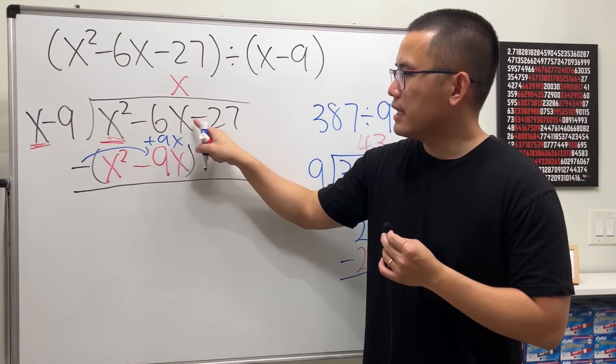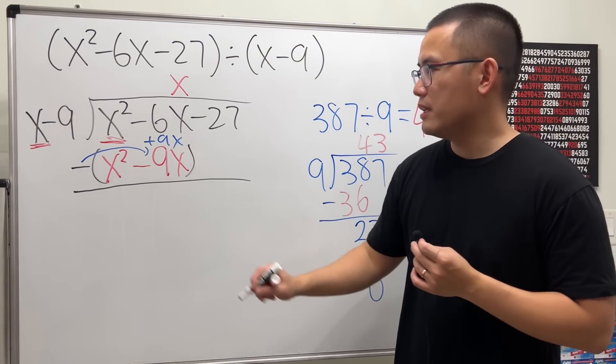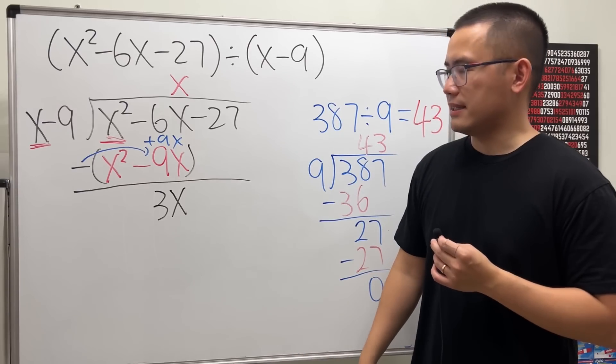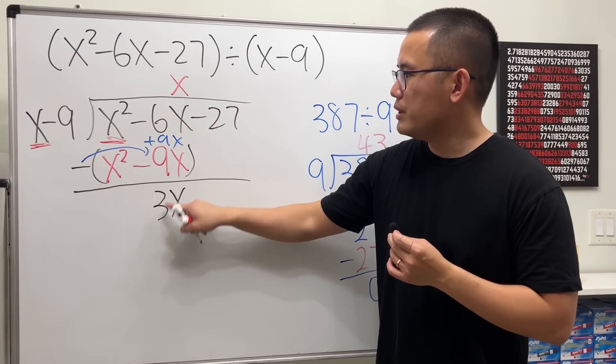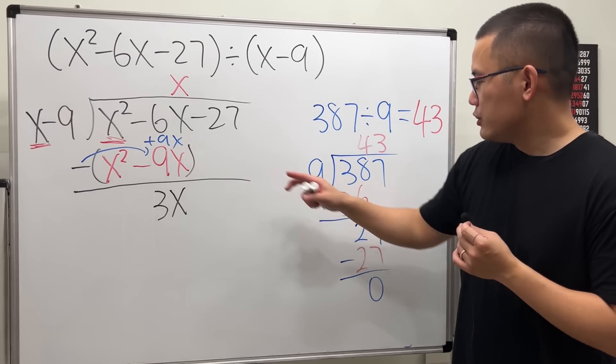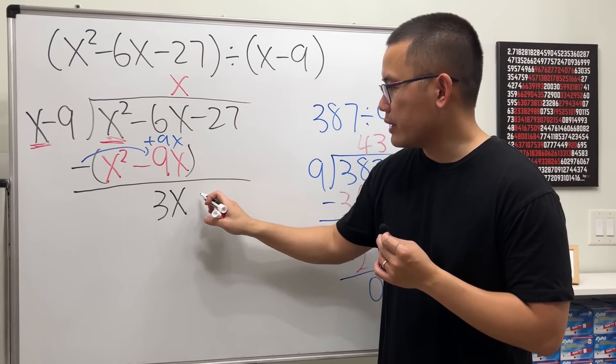So what's negative 6x plus 9x? The answer for that is 3x. Negative 6 plus 9 is 3, and then we bring down the x term. And then, just like what we did earlier, you bring down what's left. Here we have the minus 27, so write that down.